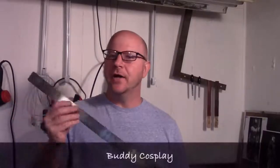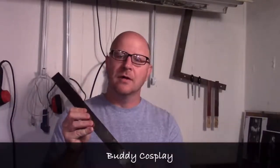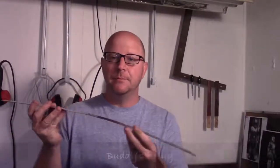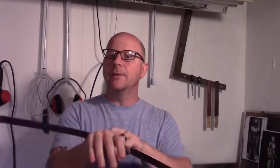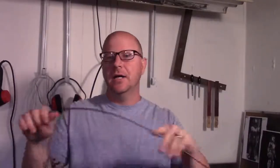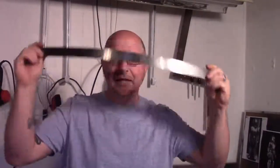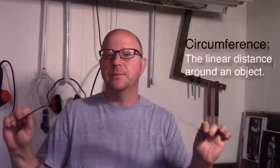Rulers are great. They have a nice straight edge you can use to cut along and they're great for getting measurements, but they have their limitations. You can't really wrap them around a wrist, a leg, a head. You can't get any kind of real circumference measurements.